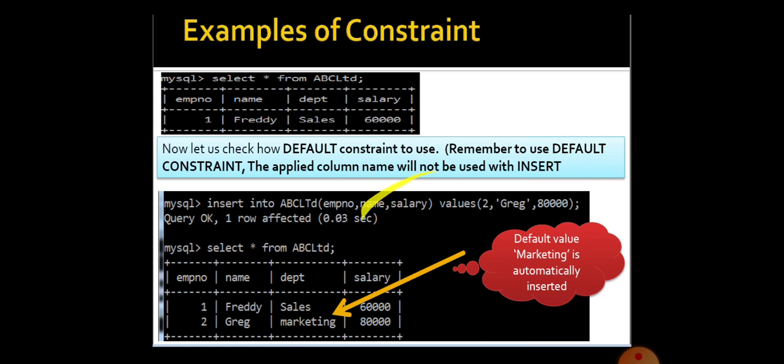Here we are specifying selected columns only: employee number, name, salary. Even though we are having department column in that particular table, we are not specifying that column in our insert command. So here we are trying to insert 2 for employee number, Greg for employee name, and 80,000 for salary. We deliberately avoid department at the time of insertion.